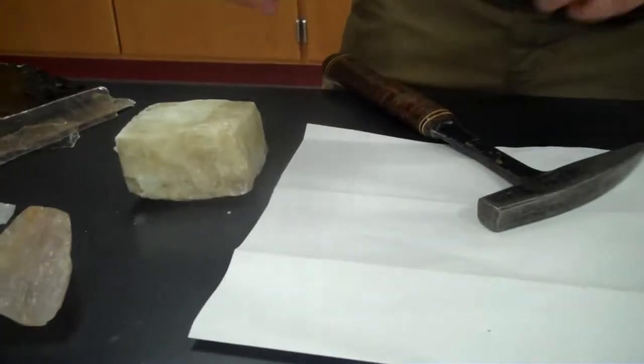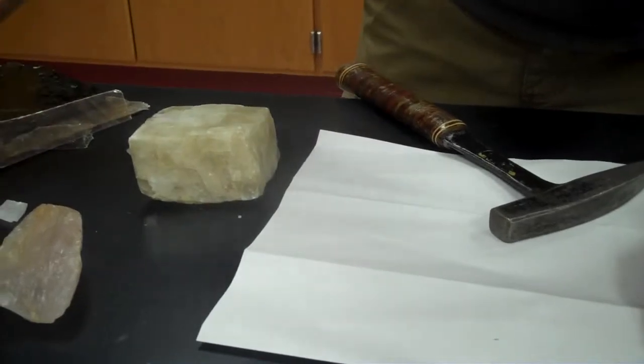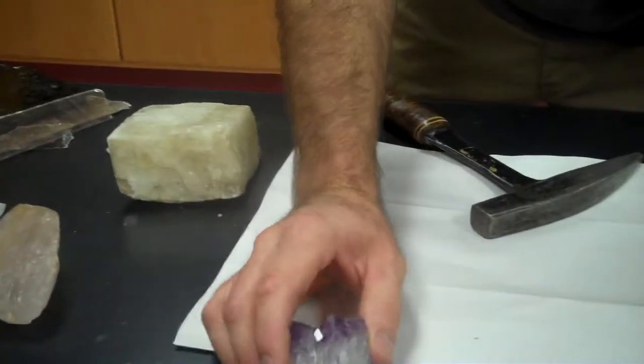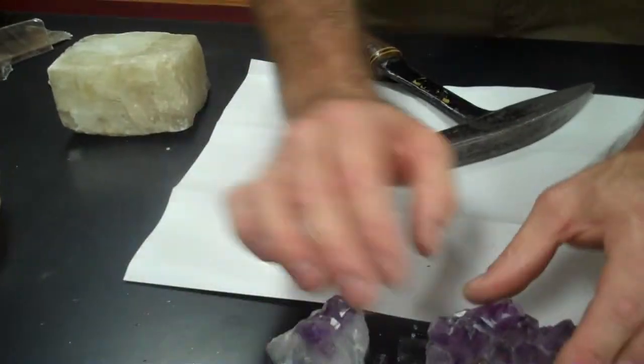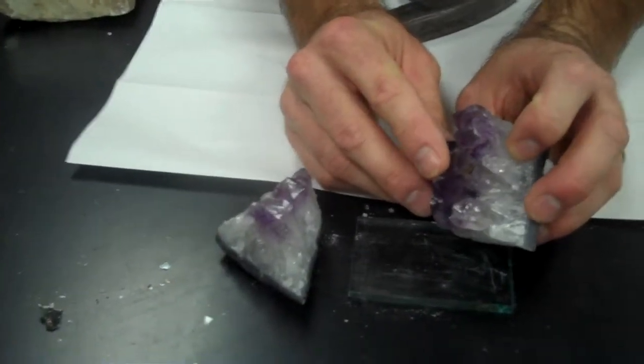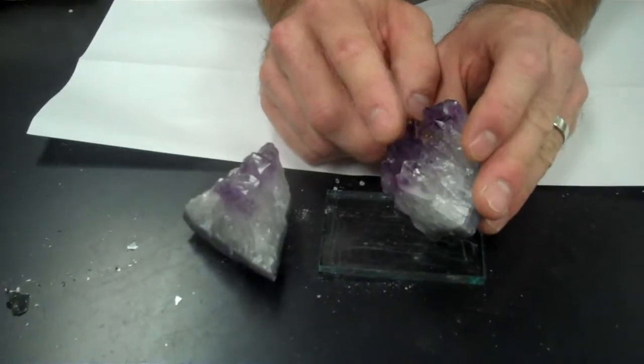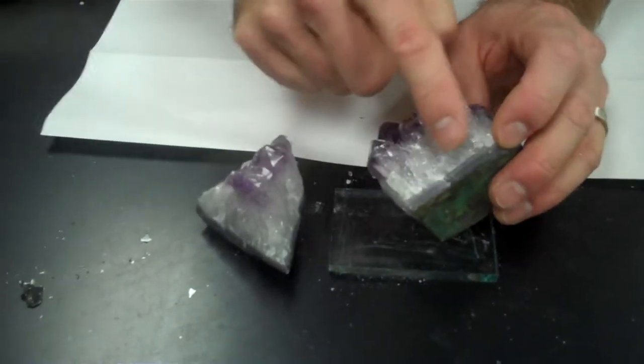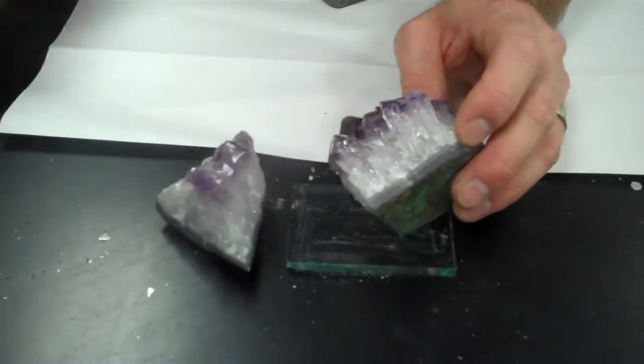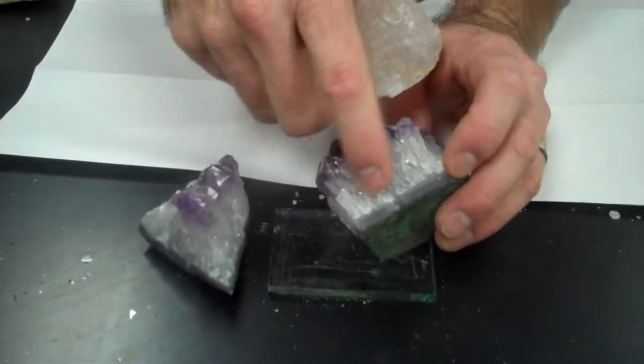One other thing that I just want to point out is crystal form. And if we look at this quartz, you can see these nice flat surfaces here. Those don't necessarily mean that this is cleavage. Cleavage is how the mineral breaks, and when the mineral breaks, it breaks unevenly. Like this quartz, or this part down here.